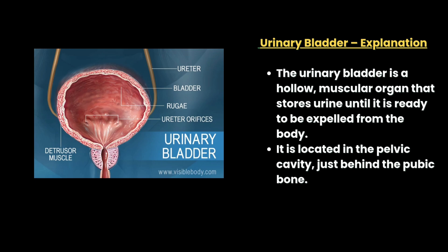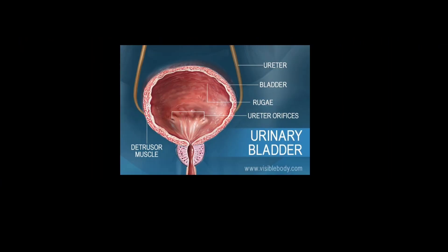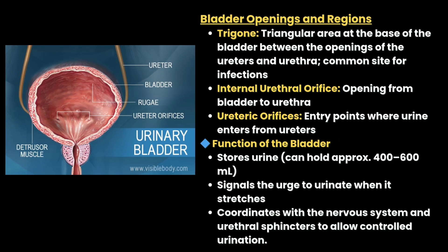Next, the urinary bladder. The urinary bladder is a hollow muscular organ that stores urine until it is ready to be expelled from the body. It is located in the pelvic cavity just behind the pubic bone. The trigone is a triangular area at the base of the bladder between the openings of the ureters and urethra, and is a common site for infection. The internal urethral orifice is the opening from bladder to urethra. The ureteric orifice is the entry point where urine enters from the ureter.